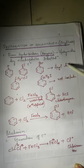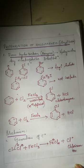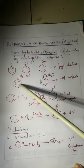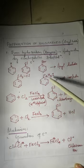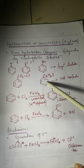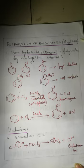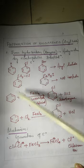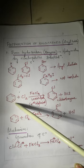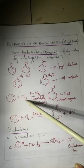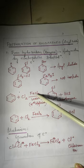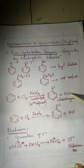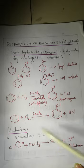In benzene, a halogen group is directly attached to form benzene halide. Chlorobenzene and bromobenzene are included under aryl halides. However, when the benzene ring is not directly attached to the chlorine, it is not included. Benzene reacts with chlorine in the presence of a Lewis acid such as FeCl3 to give chlorobenzene and HCl.